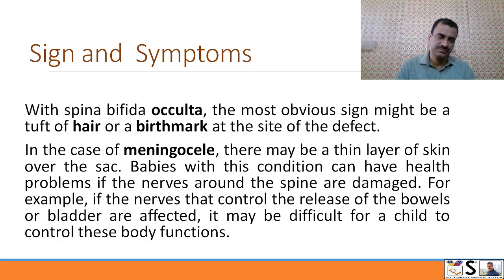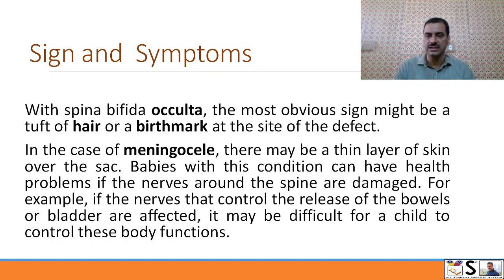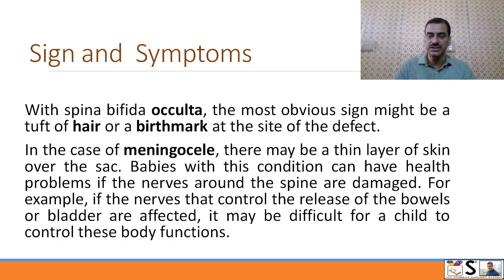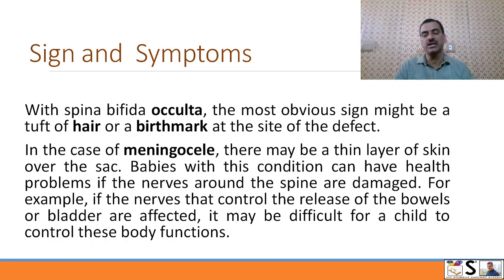Signs and symptoms of spina bifida: With spina bifida occulta, the most obvious sign may be a tuft of hair or a birthmark at the site of the defect. In the case of meningocele, there may be a thin layer of skin or membrane over the sac. Babies with this condition can have health problems if the nerves around the spine are also damaged — for example, if the nerves controlling the bowel and bladder are affected, the child may find it difficult to control these functions.